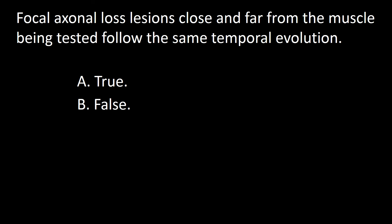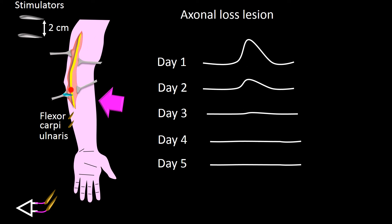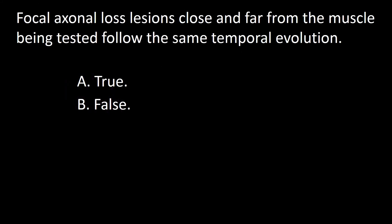Next question: focal axonal loss lesion close and far from the muscle being tested follows the same temporal evolution. A: True, B: False. A focal axonal loss lesion far from the flexor carpi ulnaris took four days for the compound muscle action potential to become abnormal. A lesion close to the flexor carpi ulnaris took only two days for the compound muscle action potential to disappear. So the closer the lesion is to the muscle, the sooner the compound muscle action potential disappears. So the answer is B.